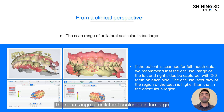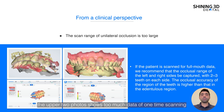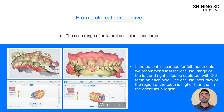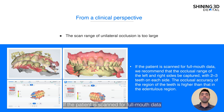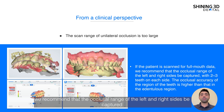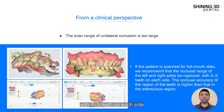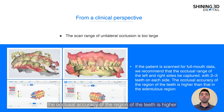Second, the scan range of the unilateral occlusion is too large. The upper two photos show that too much data at one time had been collected during the occlusion scan. We suggest selecting a suitable occlusal range. If the patient is scanned for full mouth data, we recommend that the occlusal range of the left and right sides are captured with two to three teeth on each side, like the lower two photos shown. Besides, the occlusal accuracy of the region with teeth is higher than the one with the edentulous region.